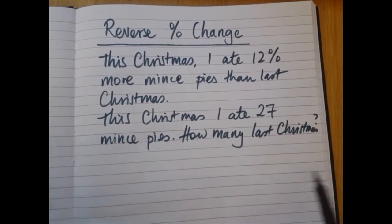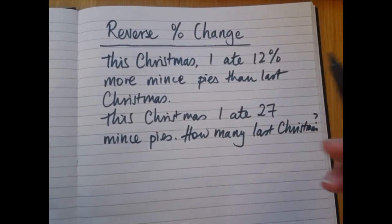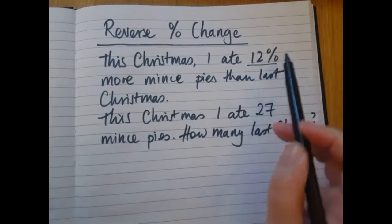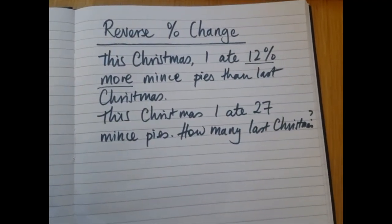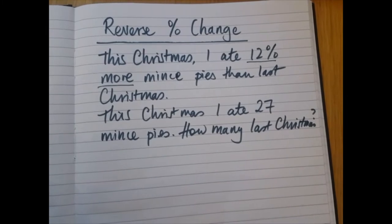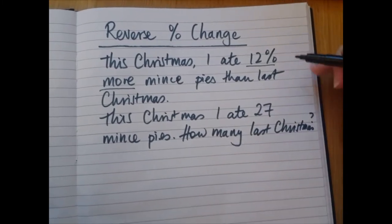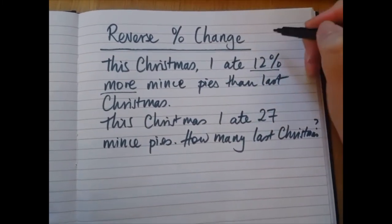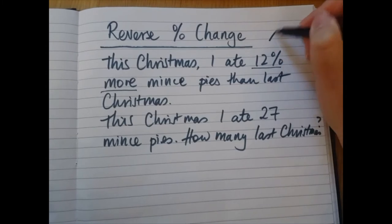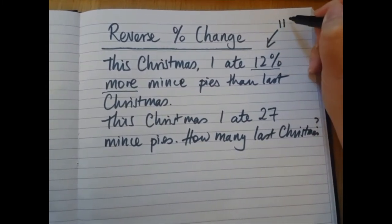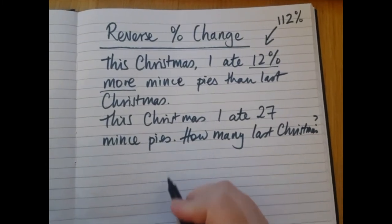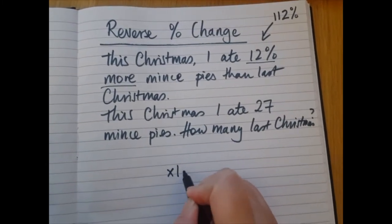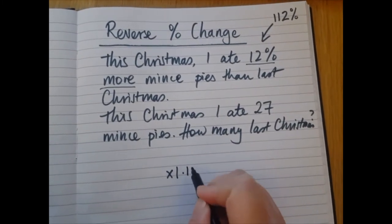First let's work out the multiplier. I ate 12% more, so that's a percentage increase. That means I start with 100 and add on 12%, which gives me 112%. So our multiplier is 1.12.